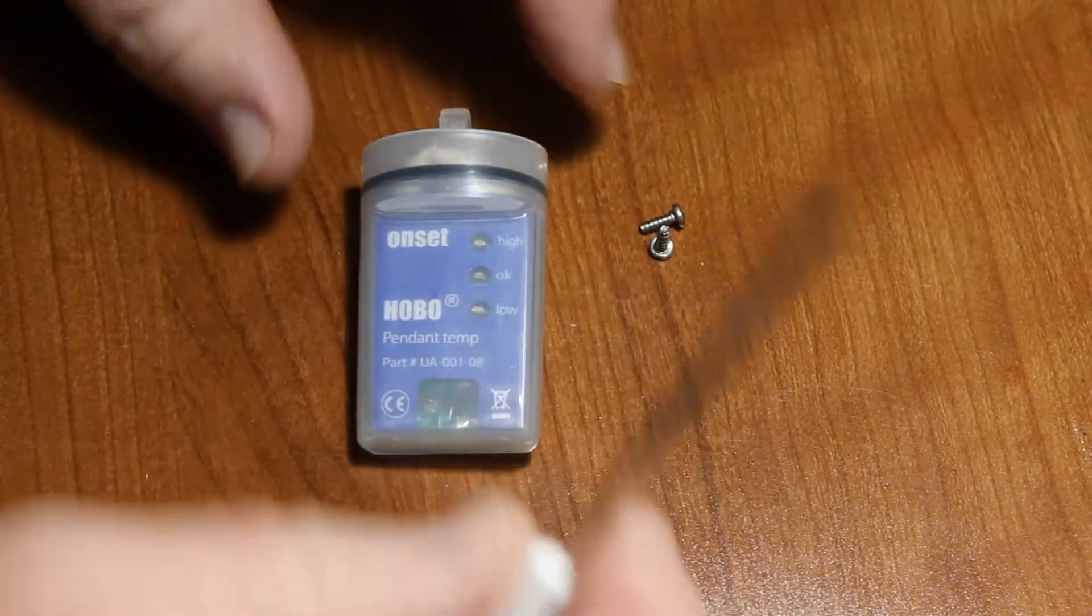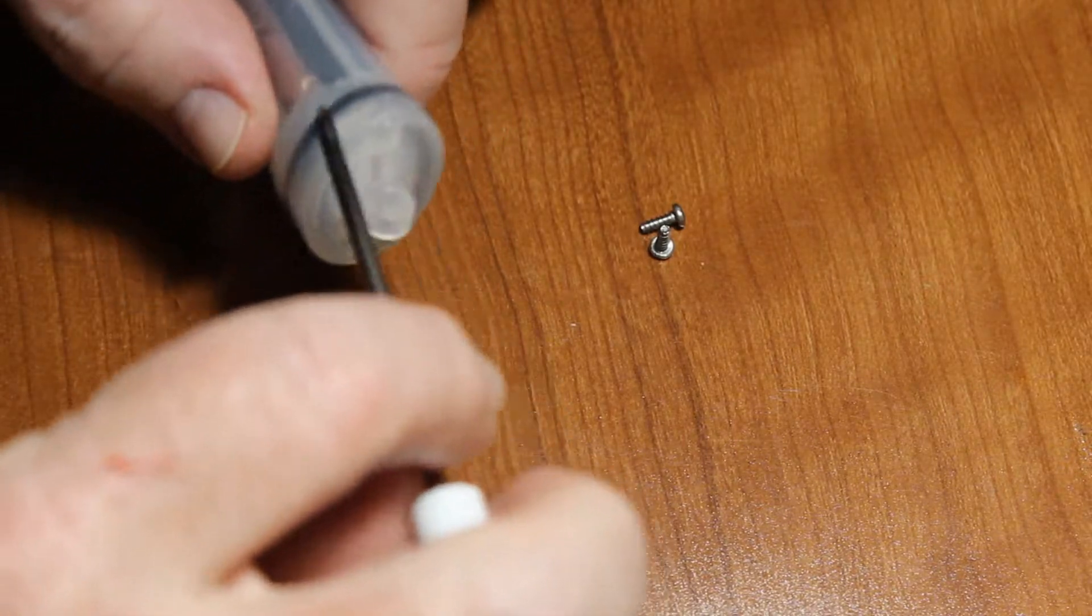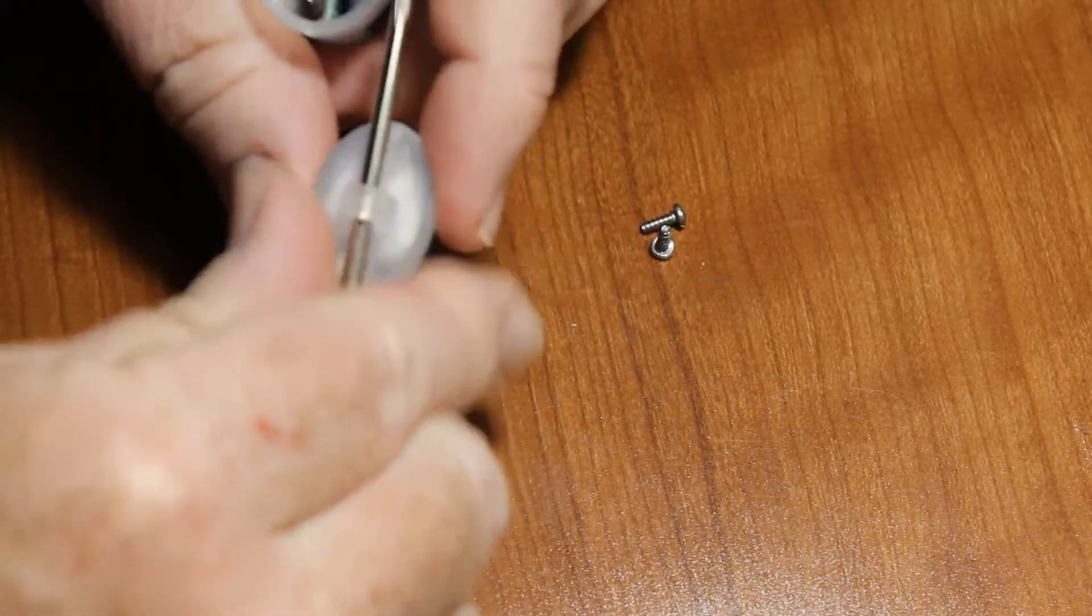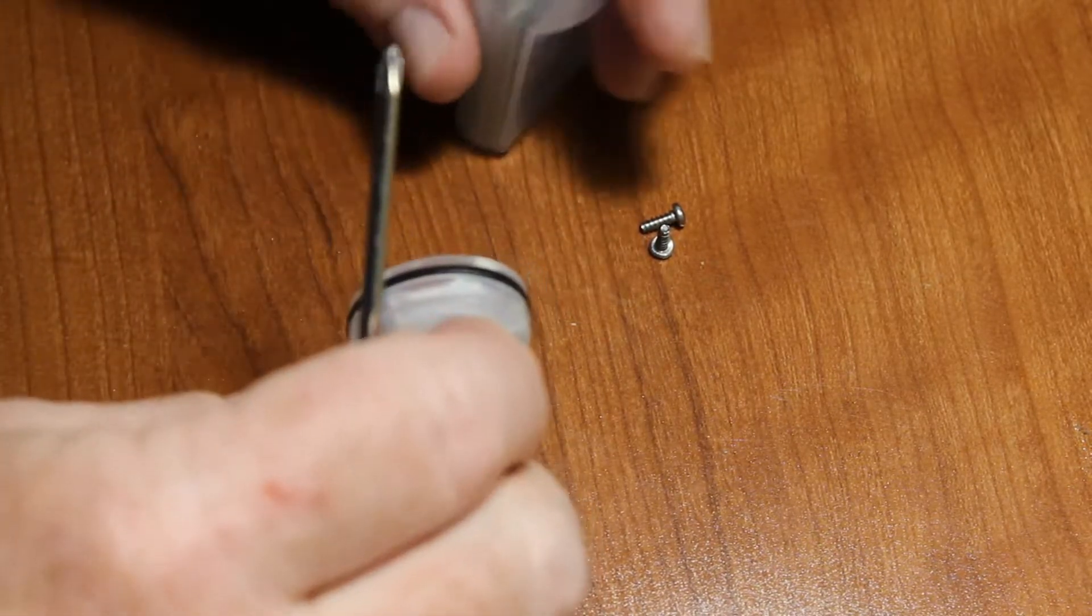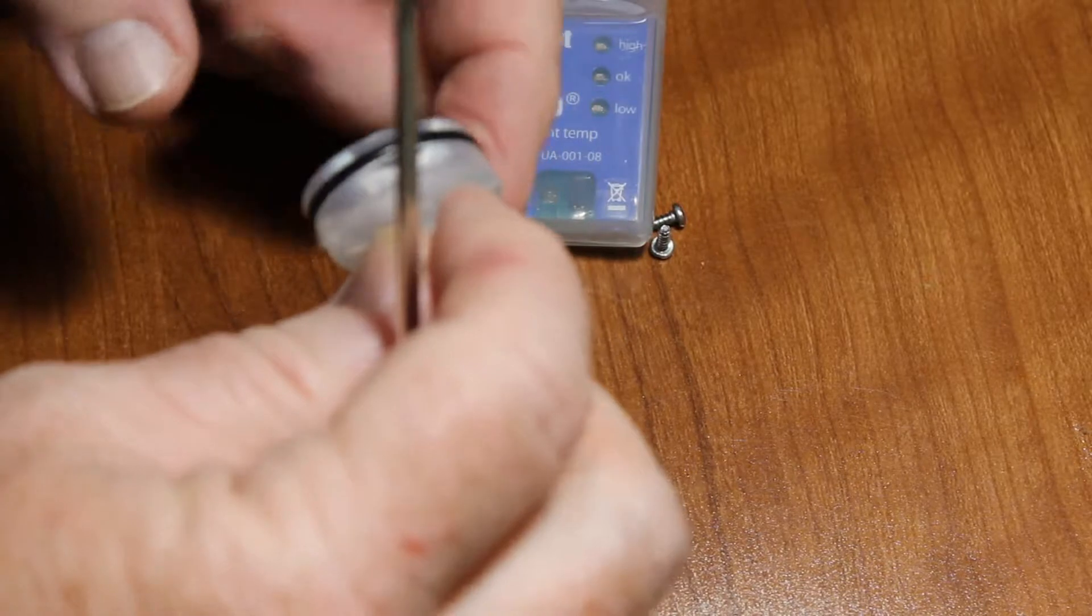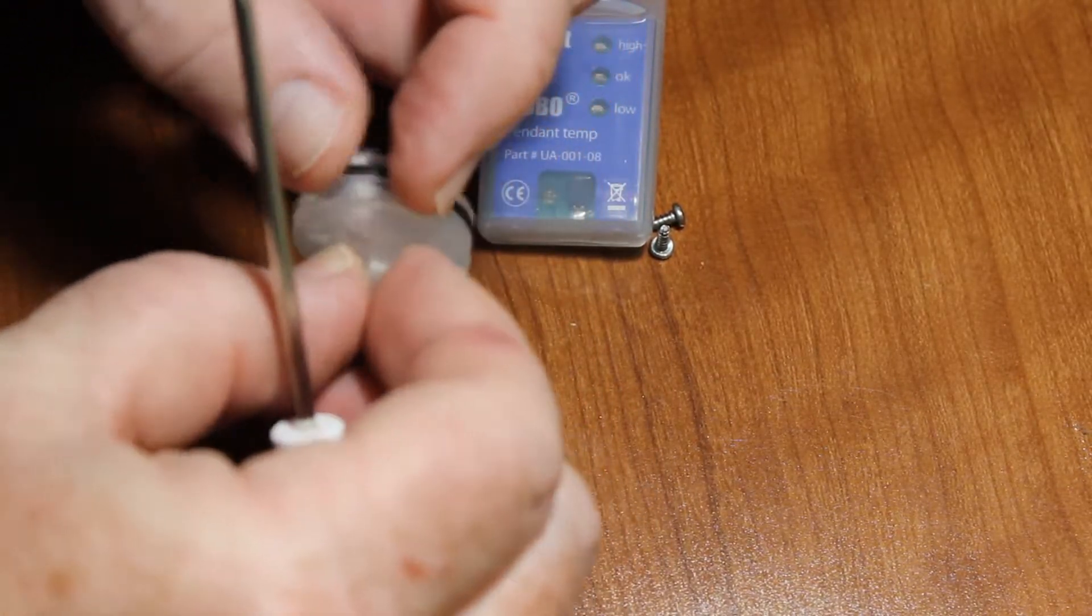We've removed the two stainless steel screws and now we're going to pull the top off. There's an O-ring that seals this, so you have to give it a little bit of a pull and that will come out. Keep in mind that this O-ring should be lubricated. You can use silicone lubricant.